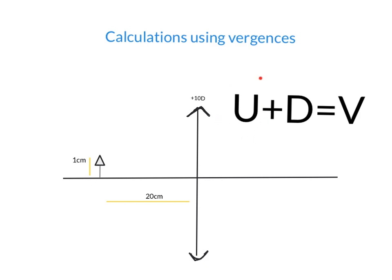So, let's first find out U. What is U, the vergence of the object? That's very simple. The vergence of the object is just 1 over 0.2 meters, which is 5 diopters.